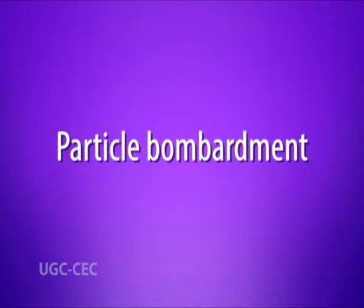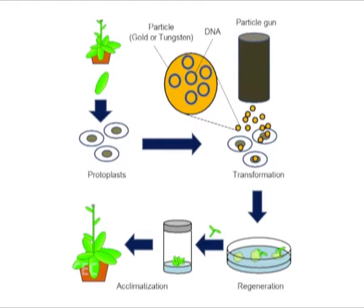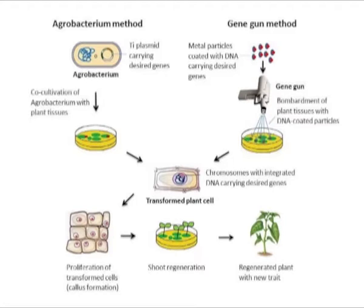Third is particle bombardment. The nucleic acid is delivered through membrane penetration at a high velocity, usually connected to microprojectiles. The gene gun or biolistic particle delivery system, originally designed for plant transformation, is a device for delivering exogenous DNA transgenes to cells. After the DNA-coated gold particles have been delivered to the cells, the DNA is used as a template for transcription, transient expression, and sometimes it integrates into the plant chromosome for stable transformation.